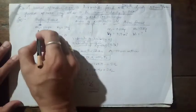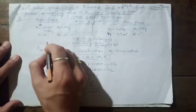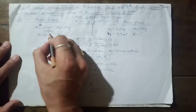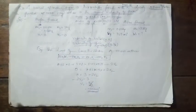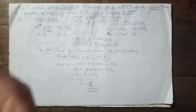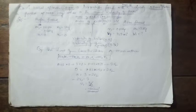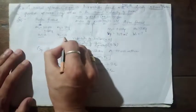Before and after firing, the mass remains the same: m1 = 0.02 kg (bullet), m2 = 2 kg (pistol). Before firing, both pistol and bullet are at rest, so their initial velocity u1 = u2 = 0.